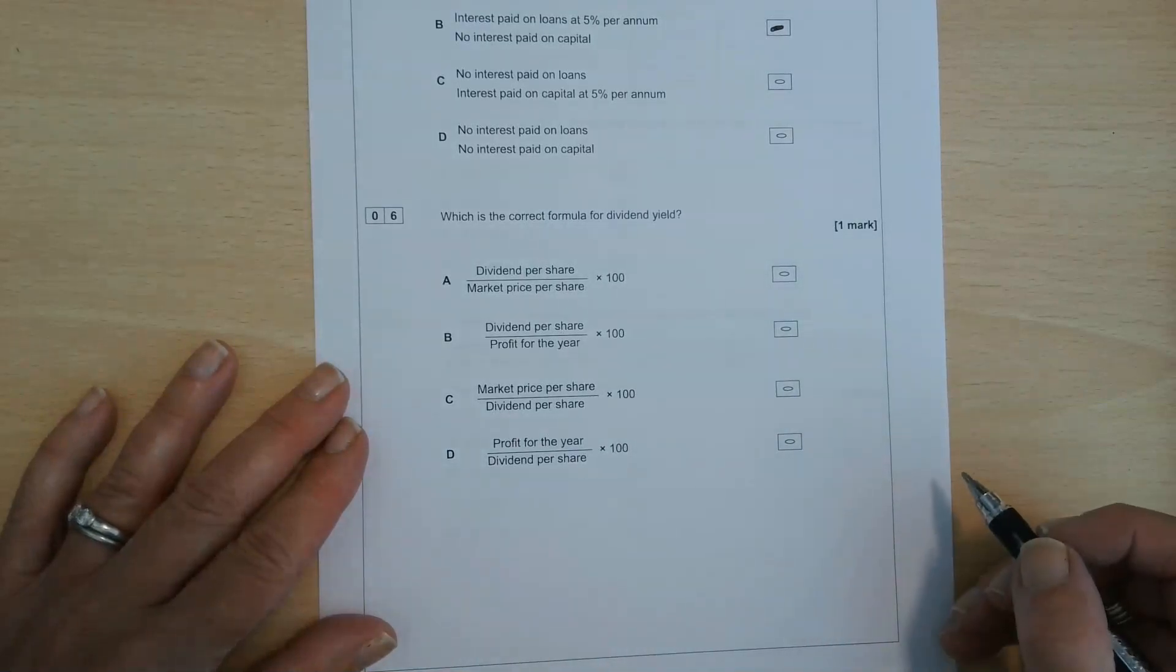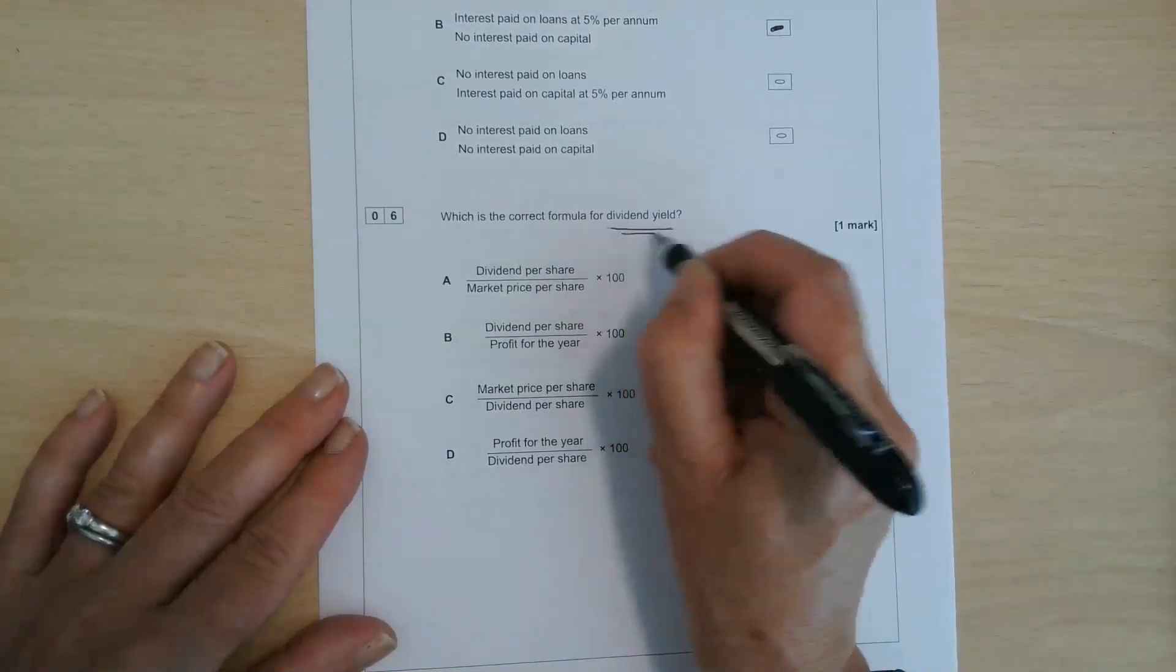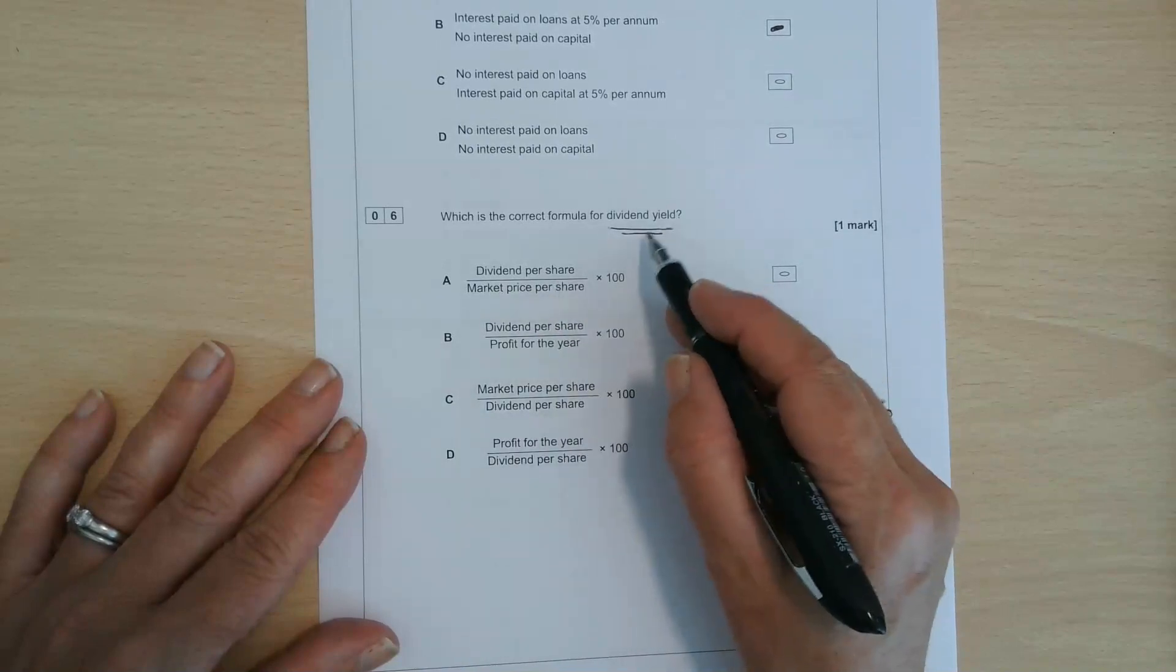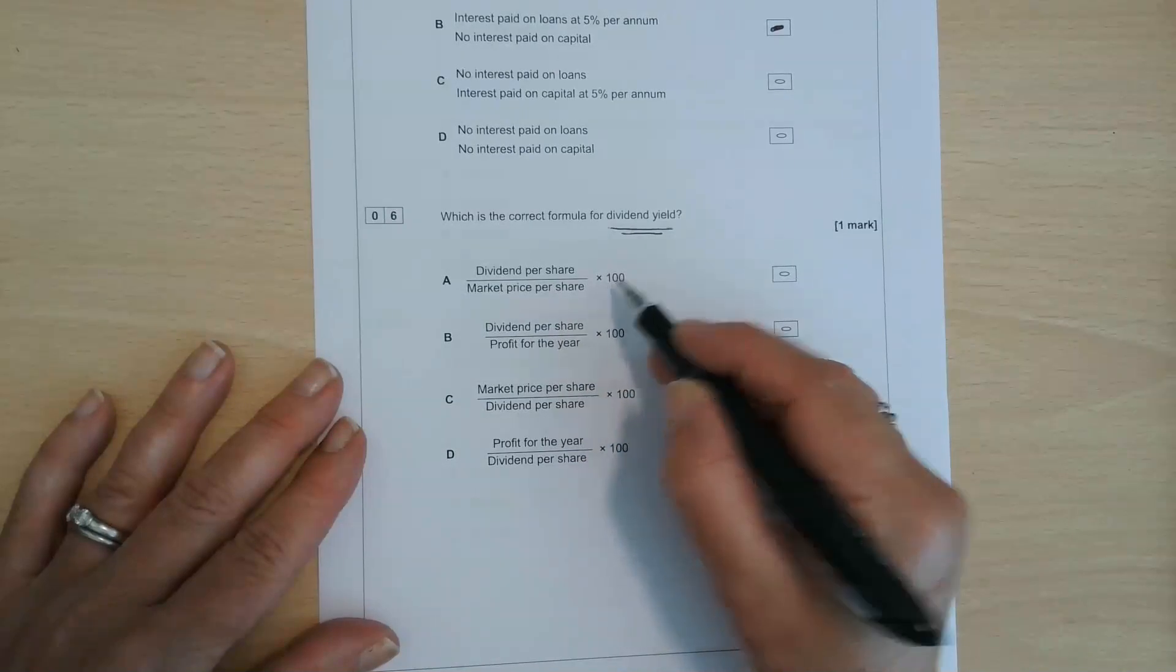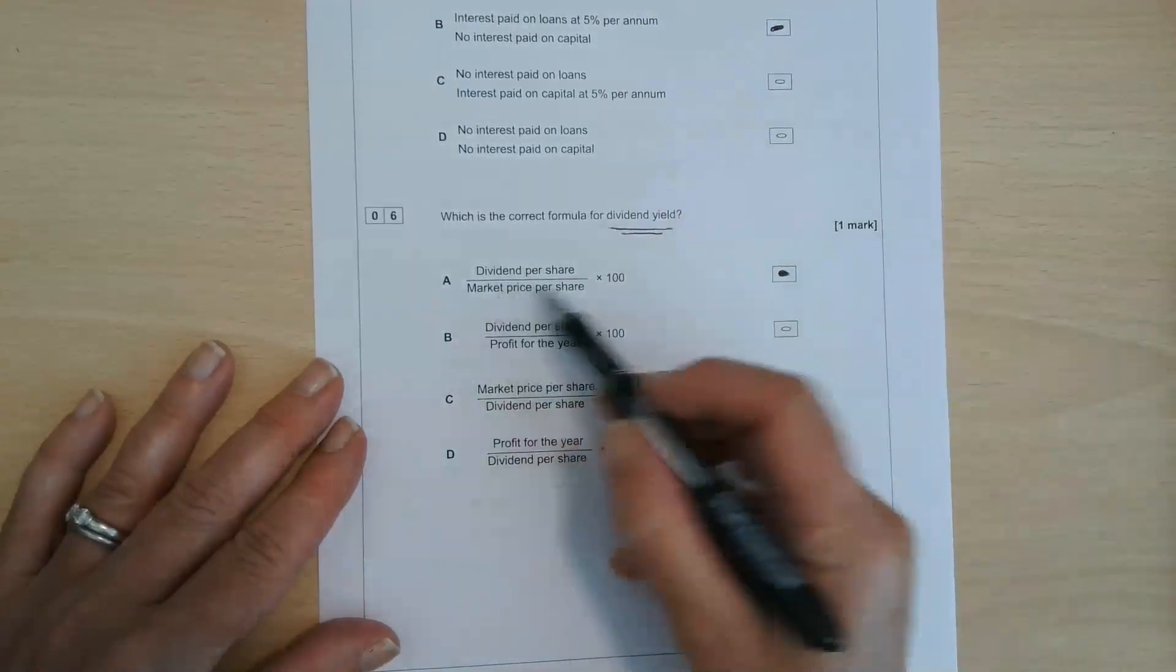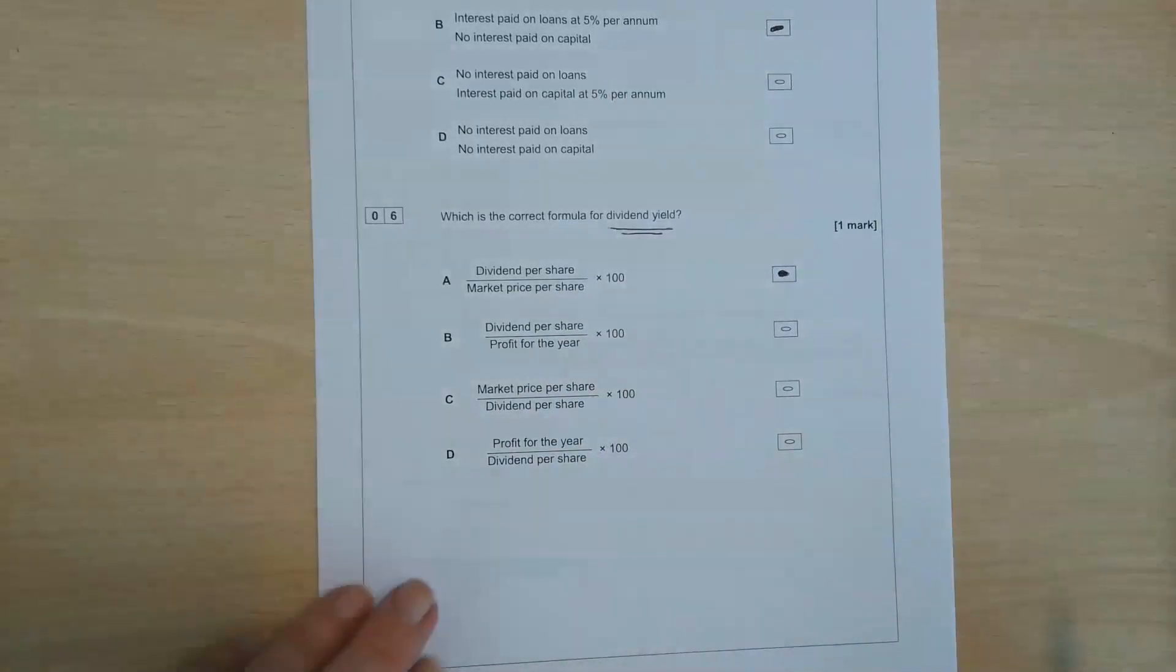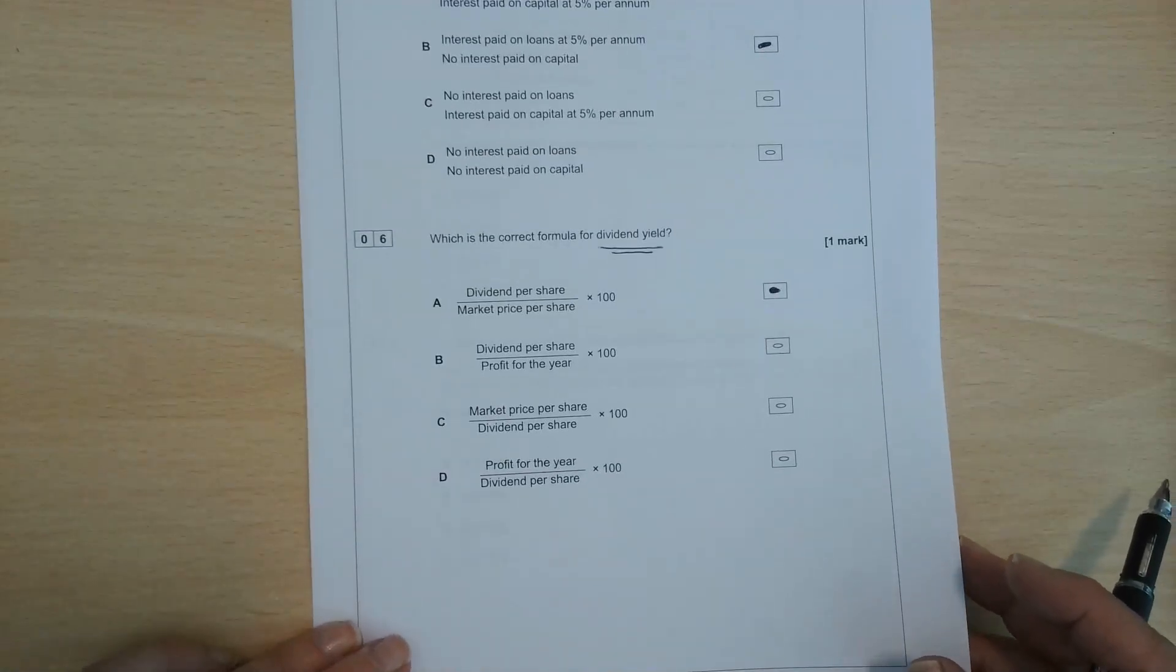Right then, correct formula for dividend yield. So this is the dividend per share, isn't it, divided by the market price per share. So it's how much the share is currently earning. So the return on a share is your dividends. So we take the dividend per share divided by the current market price. And it's a percentage, so it's times 100. So I think the answer there is going to be A, none of the rest of them make much sense. This one's upside down. So yeah, definitely for six, it is dividend per share divided by market price per share.